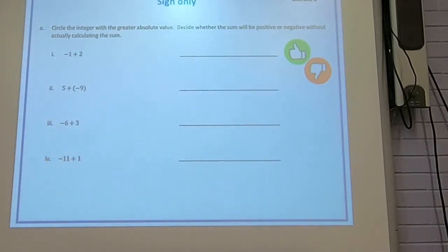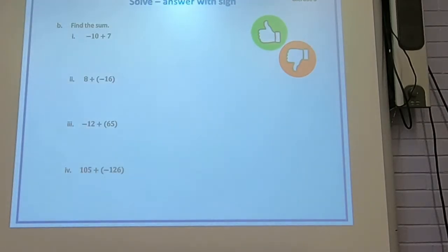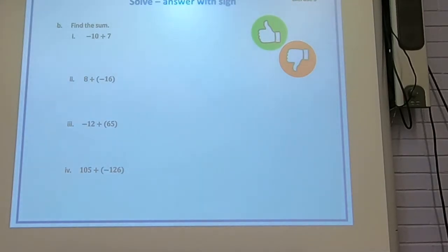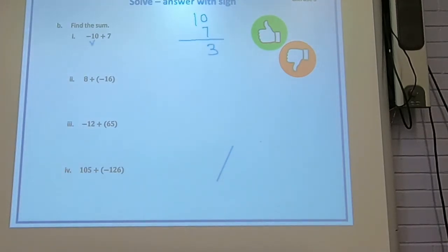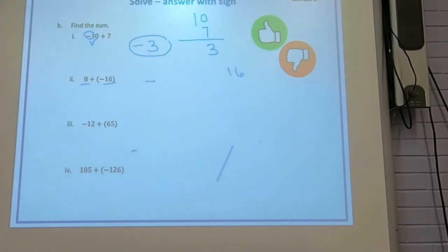Let's do these together — answer with the sign because they want the actual answer. Negative 10 and positive 7: one positive and one negative means subtraction. The bigger is 10, minus 7 gives 3. The bigger one was 10, which is negative, so the answer is negative 3. Second one: 8 and 16 — 16 is bigger, so the answer is negative. Put 16 on top, minus 8 gives 8, so the answer is negative 8.